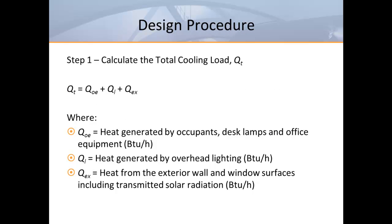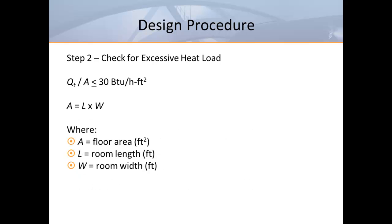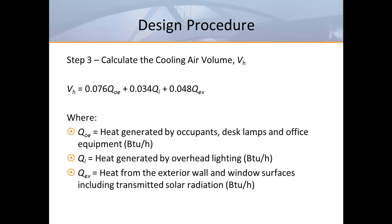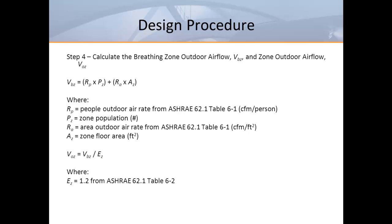Now let's look at a design procedure for displacement. First we must determine the total cooling load, then check to see if the total cooling load doesn't exceed 30 BTUs per hour per square foot. Next we must calculate the cooling volume that will need to handle the actual heat loads in the occupied zone, based on ASHRAE Research Project 949. Then we go into ASHRAE 62.1 territory — we calculate the minimum fresh air requirement for the breathing zone and apply an air change effectiveness factor of 1.2 for displacement.